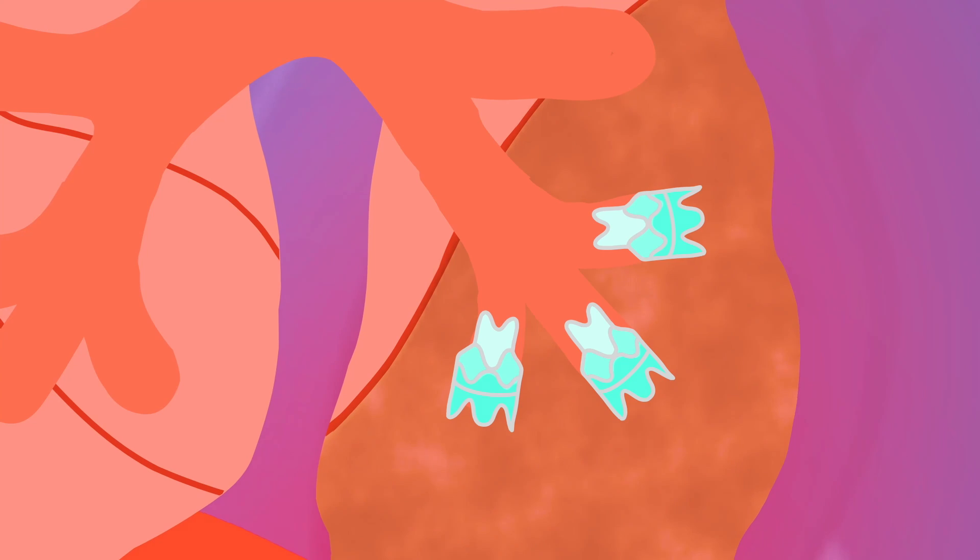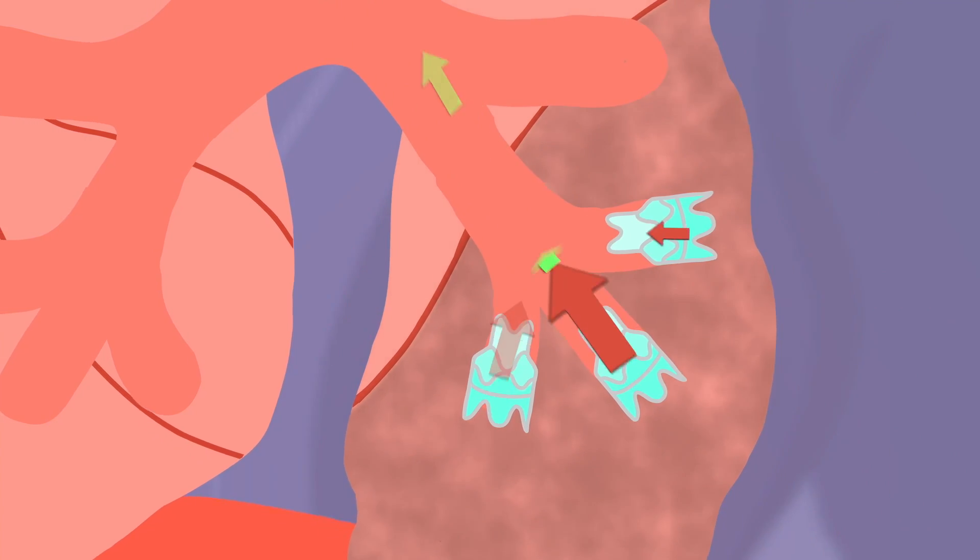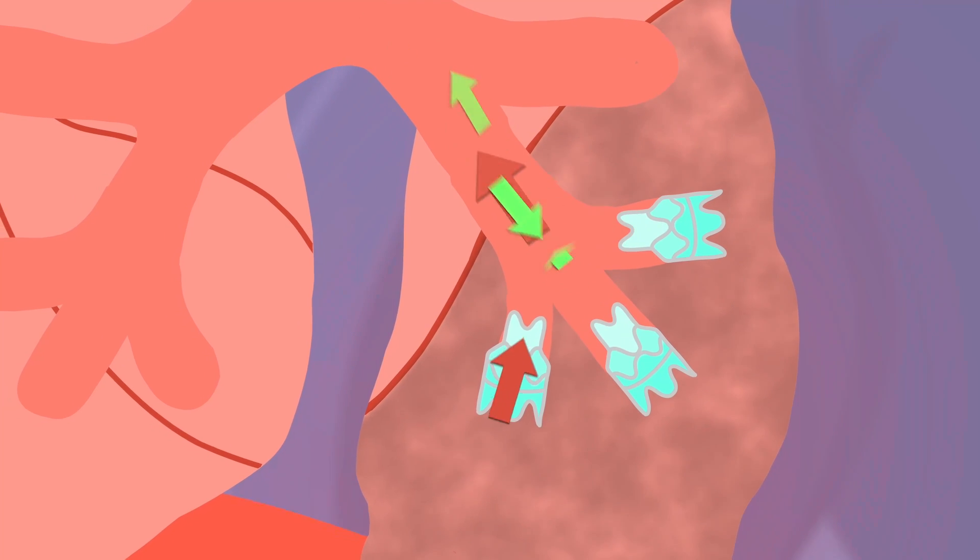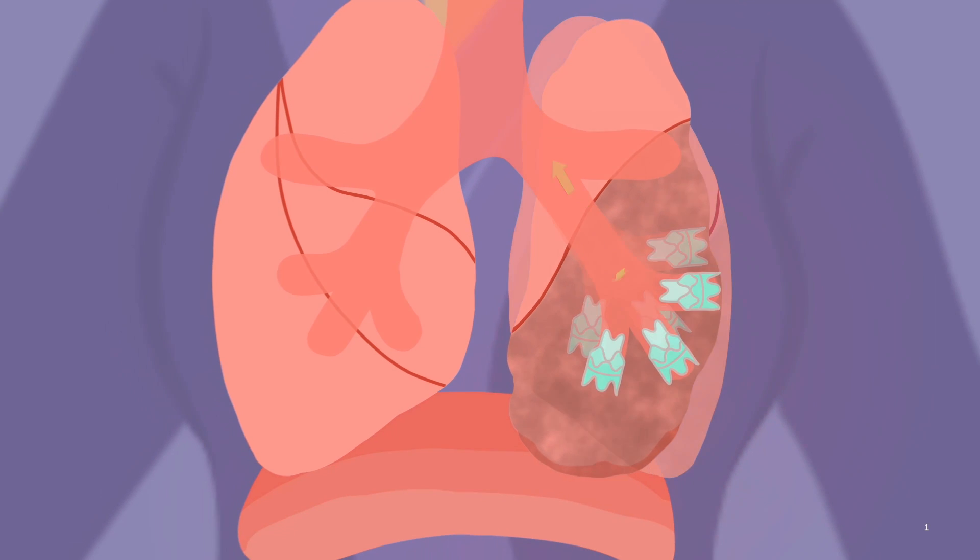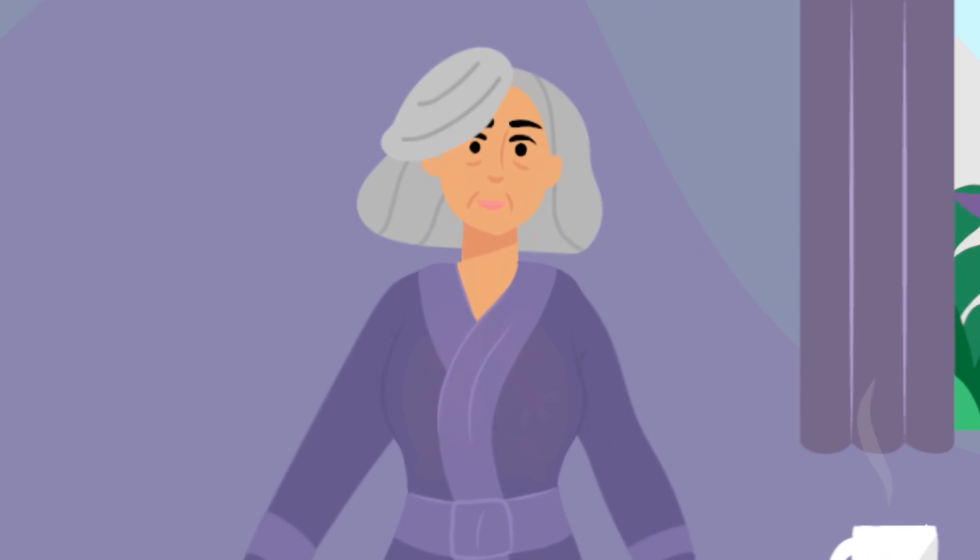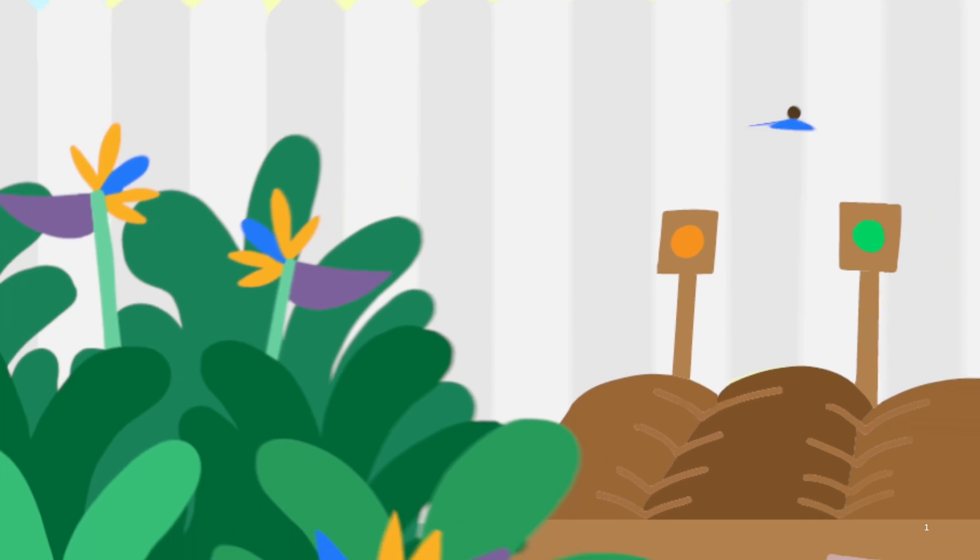These valves allow trapped air in your lungs to escape while preventing more air from entering this part of the lung. And as your lungs and diaphragm improve in function, the shortness of breath and discomfort in your chest lessen, and when this happens, you'll be able to breathe easier.